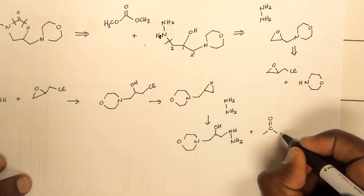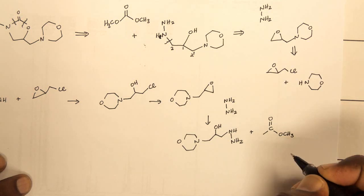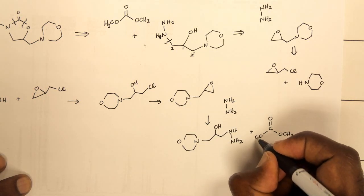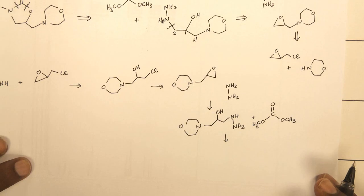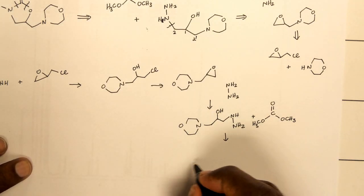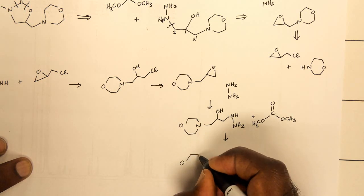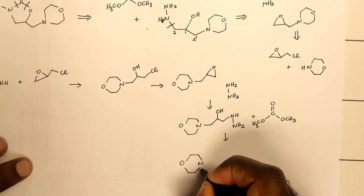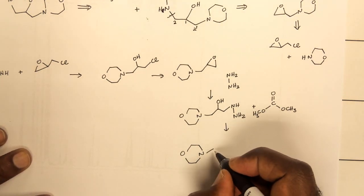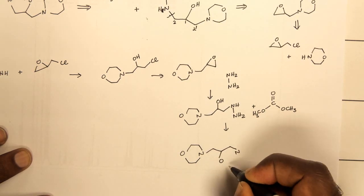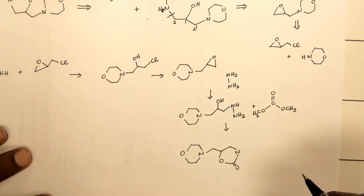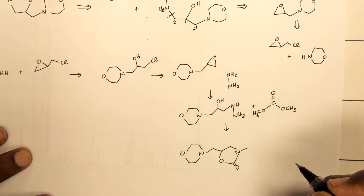If you react that with dimethyl carbonate, which would give you the target molecule, which is having a carbon atom attached to a 5-membered ring, oxygen and nitrogen. And on that nitrogen, another amino group.